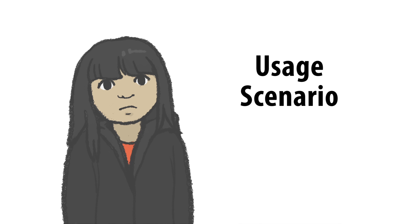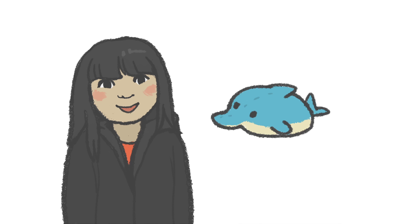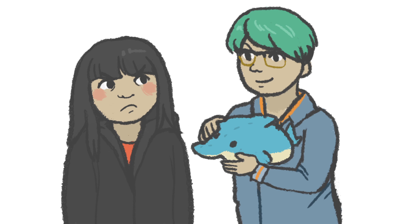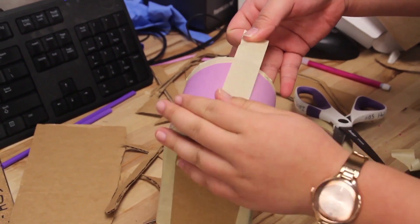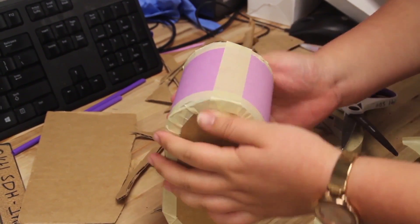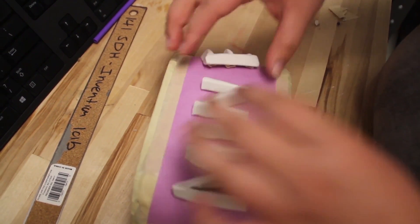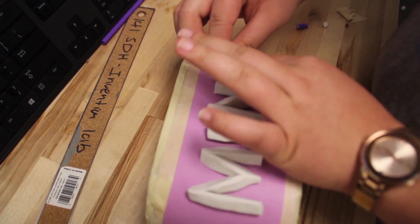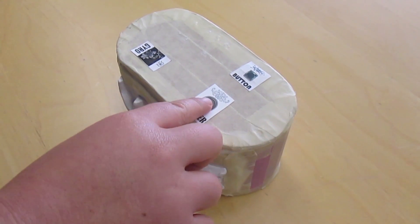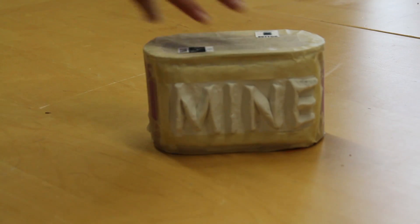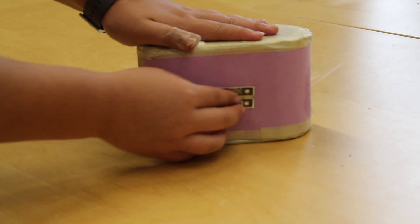Anne is an example target user. Like most 12-year-olds, she doesn't like many things, but she does like her dolphin-stuffed animal, Dolphini. Unfortunately for Anne, so does her mean big sister. Anne decides to make a box to keep Dolphini safe. She constructs the desired rounded shape from found objects and adds her own ornamentations with clay. She then places annotation marks on her model as stand-ins for mechanical or electronic components.